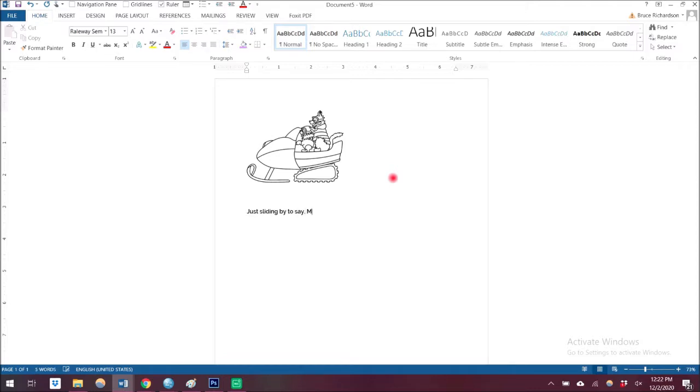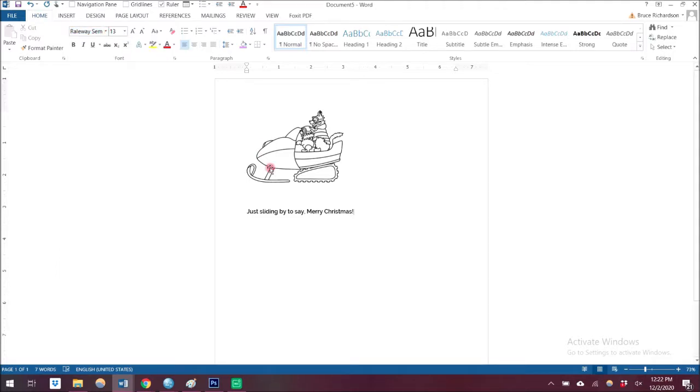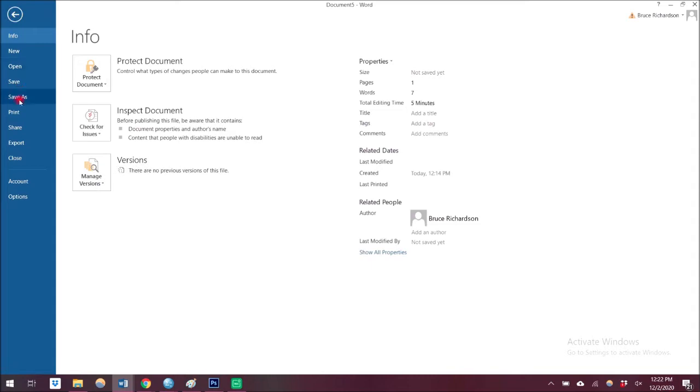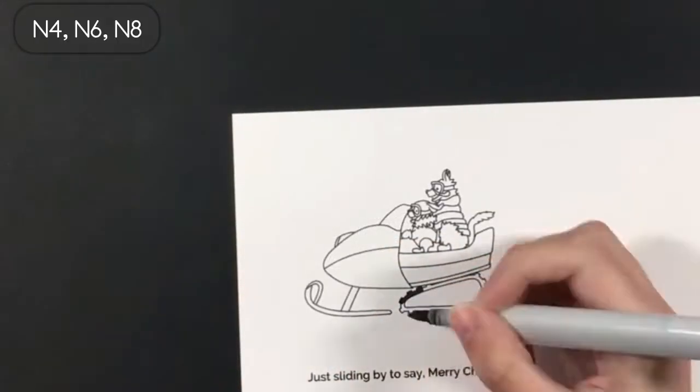What's nice about digi stamps is that you can also make your own sentiments. For this one I just wrote 'just sliding by to say Merry Christmas' and I picked a font that I like. You can use any font on your computer or even download fonts from Google to really mix up your sentiments. Once I'm happy with how things are looking I just go to file print, and once that's printed out that's all there is to it.